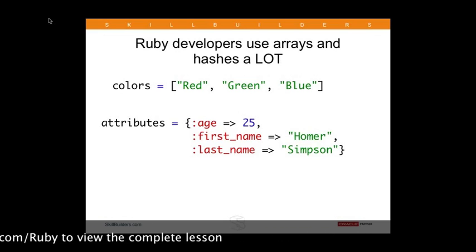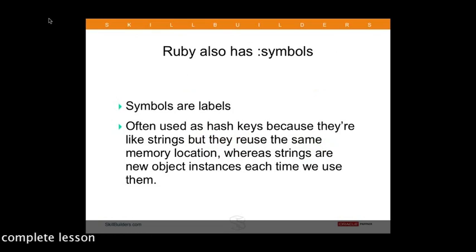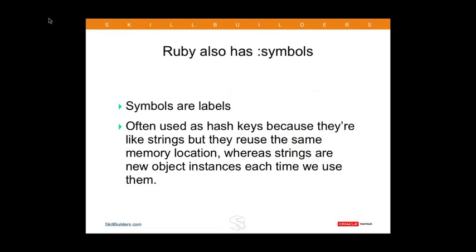You might also see things that look like variables and start with a colon — those are called symbols. Symbols are just labels in Ruby. Since everything is an object, when we create a new string we're actually creating a new object and taking up memory. Symbols can be used in place of strings where we need to label things, and we can conserve memory that way. We use them a lot of times for lookup keys in hash tables.